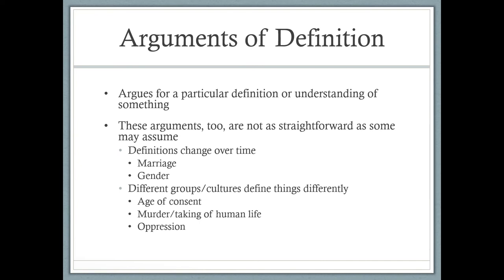Marriage is now defined completely differently — it can be between a man and a woman, or a woman and a woman, or a man and a man in most jurisdictions. And on the issue of gender itself, 50 or 20 years ago, gender was male or female. But today, look at how many genders are recognized. So definitions change over time, which makes an argument of definition difficult.